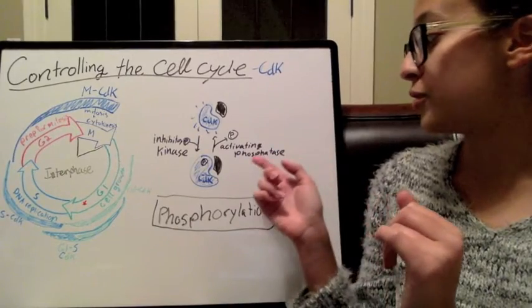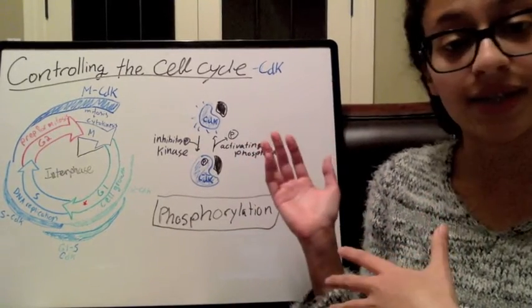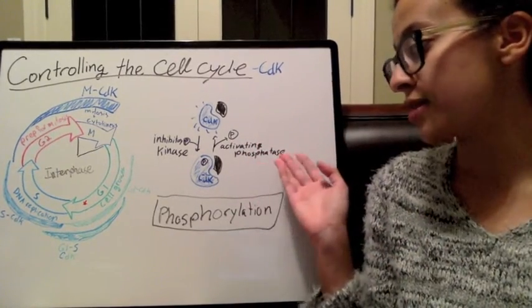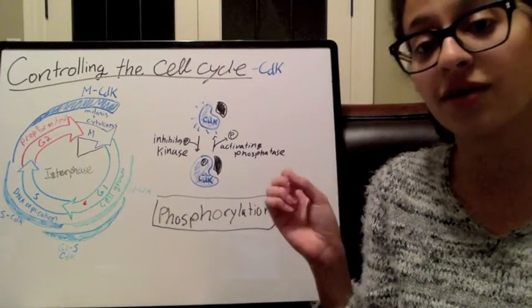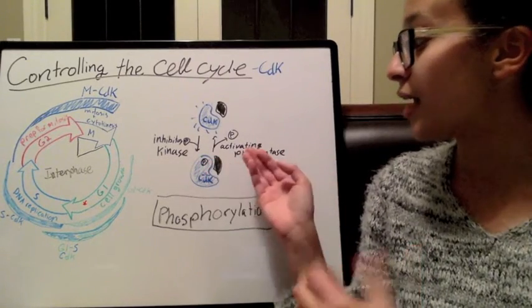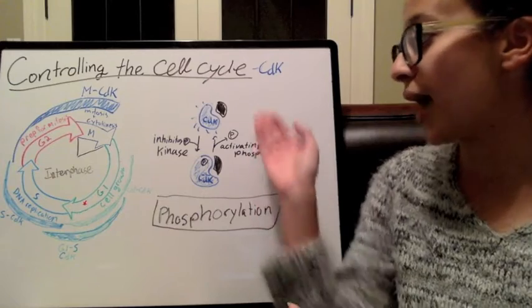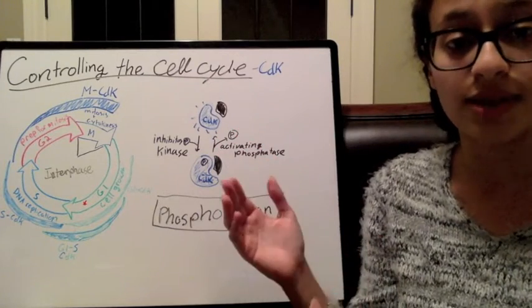And then, to activate that CDK, we would use a phosphatase. Phosphatase takes off a phosphate. So, we would remove that inhibitory phosphate, and therefore activating the CDK once again.